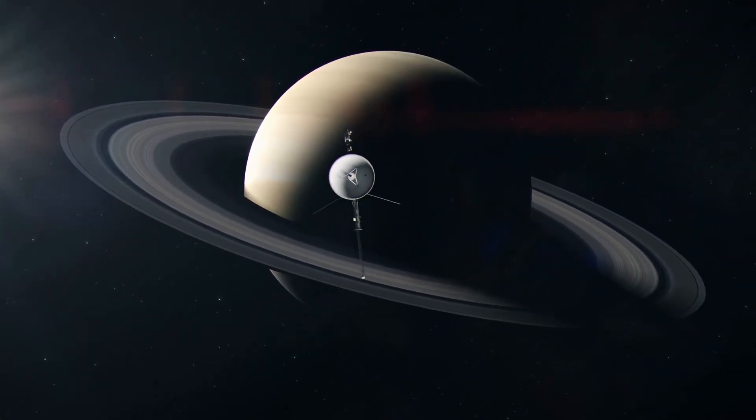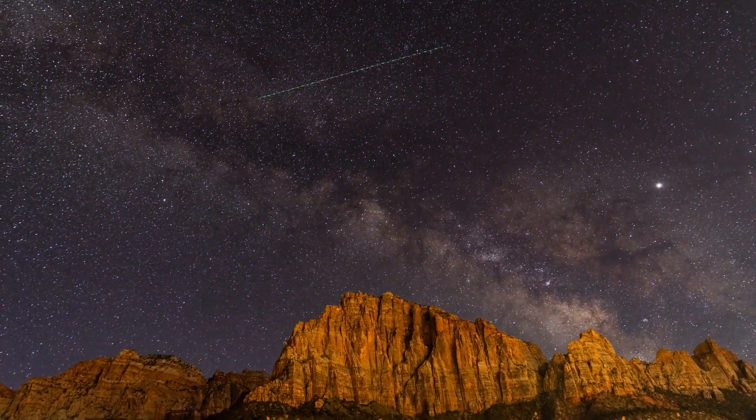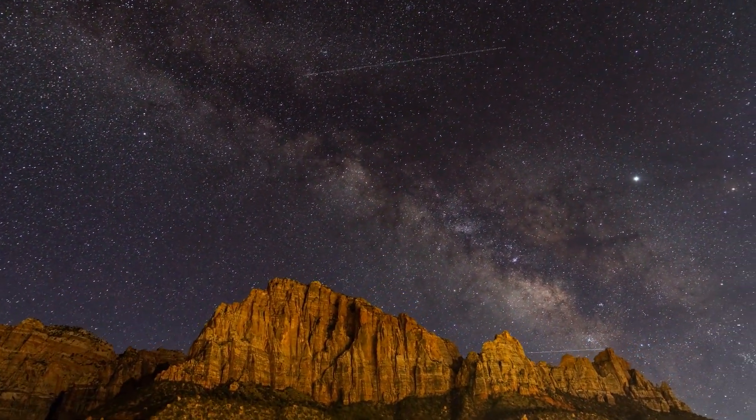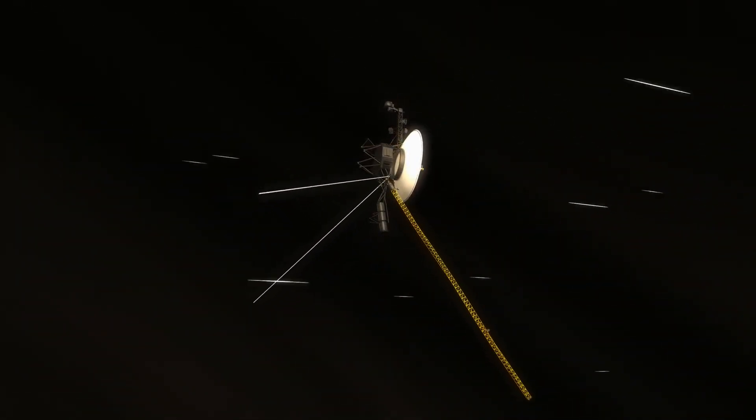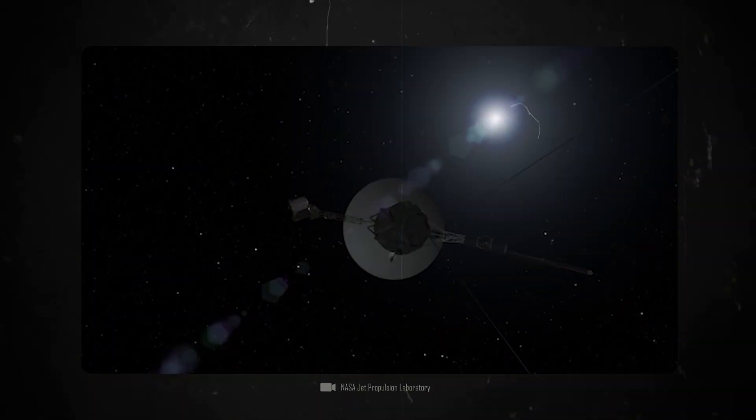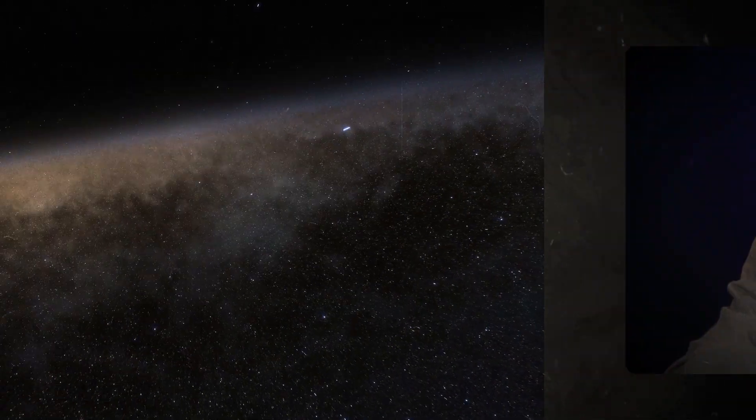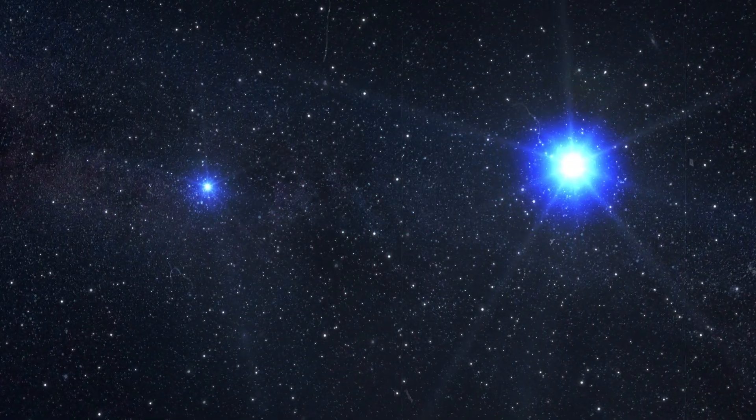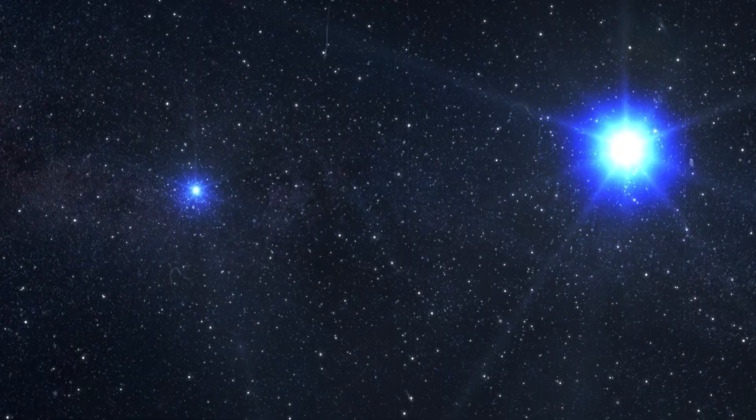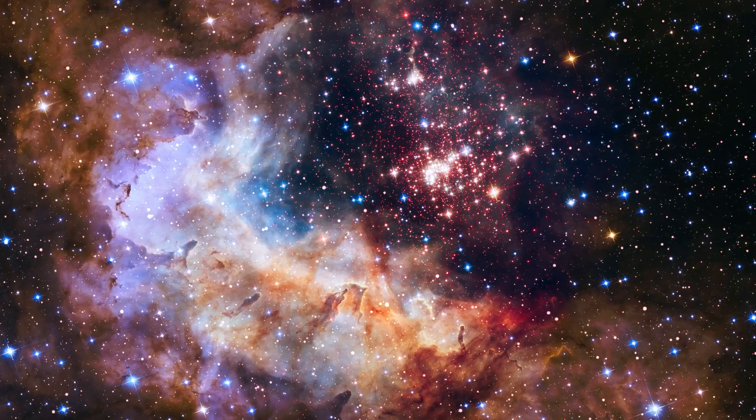Voyager 1 got its last big boost at Saturn. The speed and direction of the probes were repeatedly adjusted over the years using gravitational assistance maneuvers. So the probes do not require any additional propellants. They are now moving through space in a state of so-called free flight, which means they no longer need to be actively propelled to continue their journey. They glide through the vacuum of space largely unaffected by the gravity of the sun or other bodies, and this flight will continue forever.